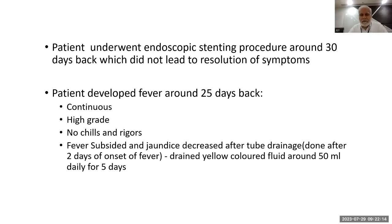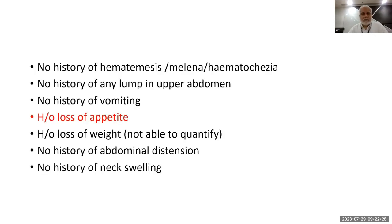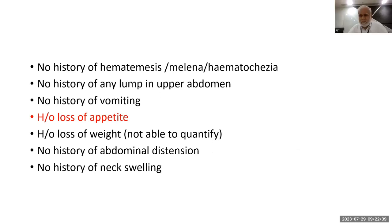You said 'tube drainage' — it would have been better to say 'external tube drainage.' It was a percutaneous tube, so 'external tube drainage' is the correct terminology. Also, when you mentioned 'no history of any lump in upper abdomen' — what was in your mind? You should say 'right upper abdomen' to be more specific.